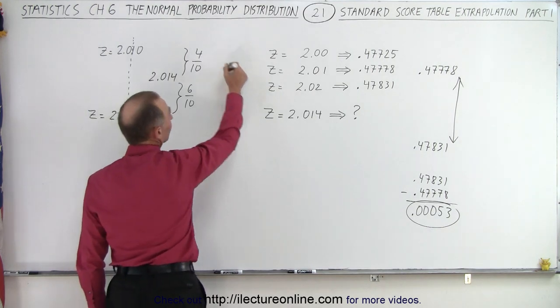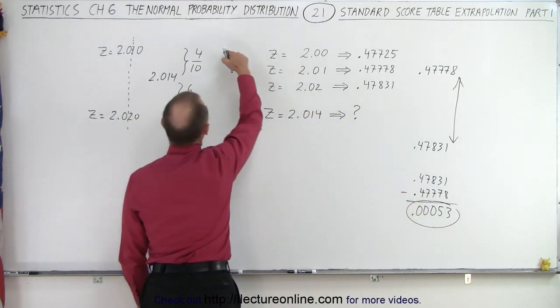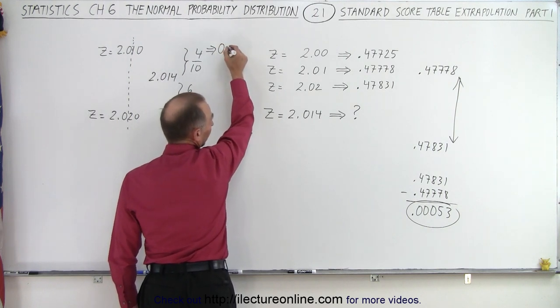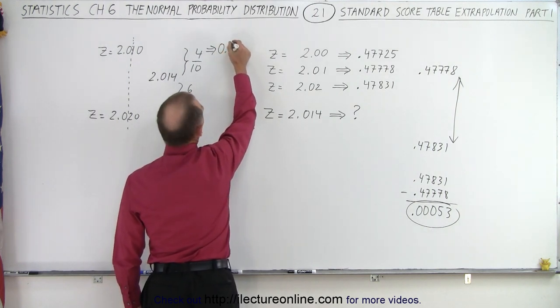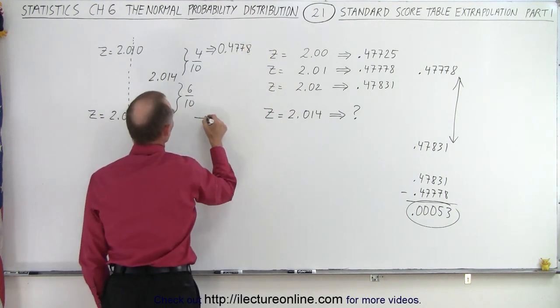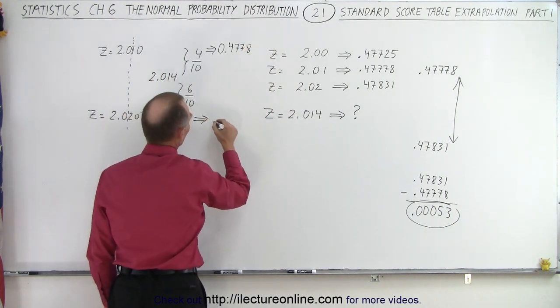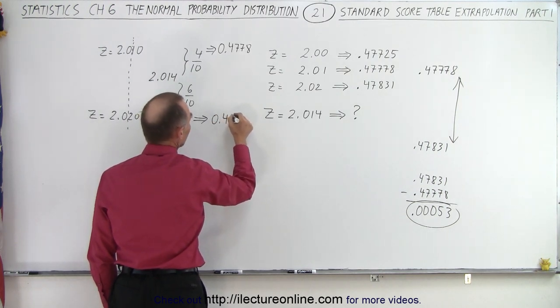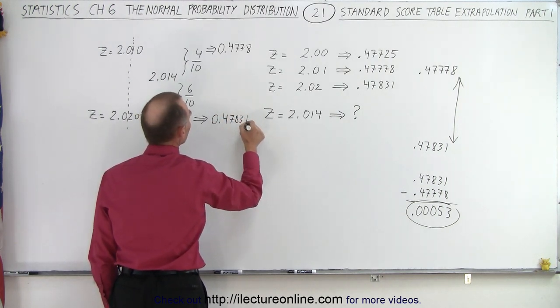So if we then put this first number, the smaller number up here, so this corresponds to 0.47778. This number here corresponds to 0.47831, the larger one there.